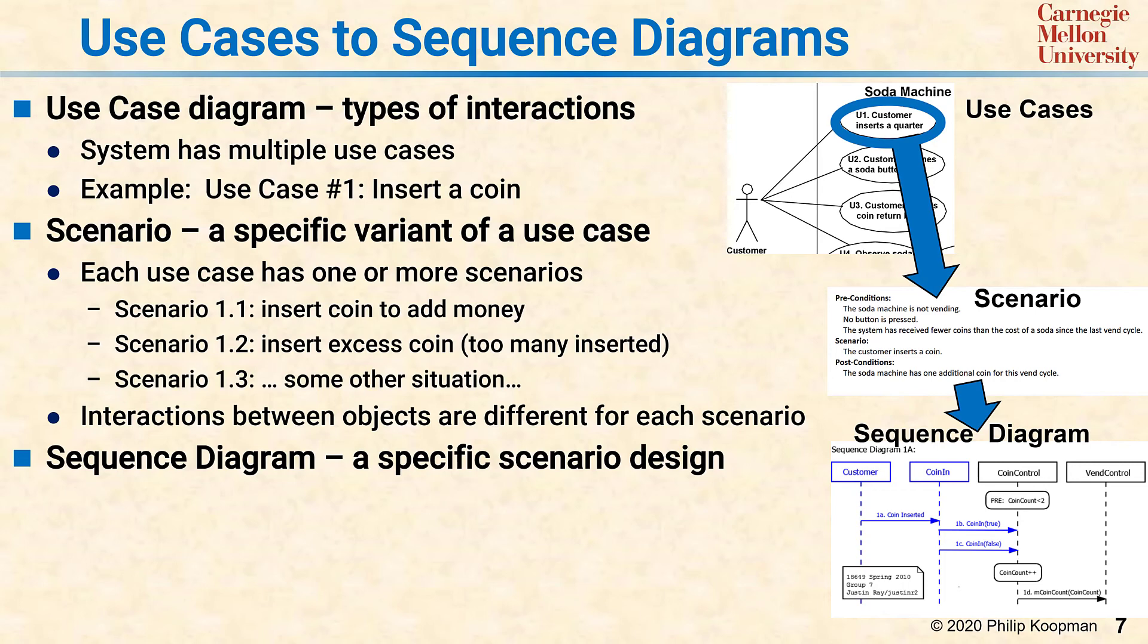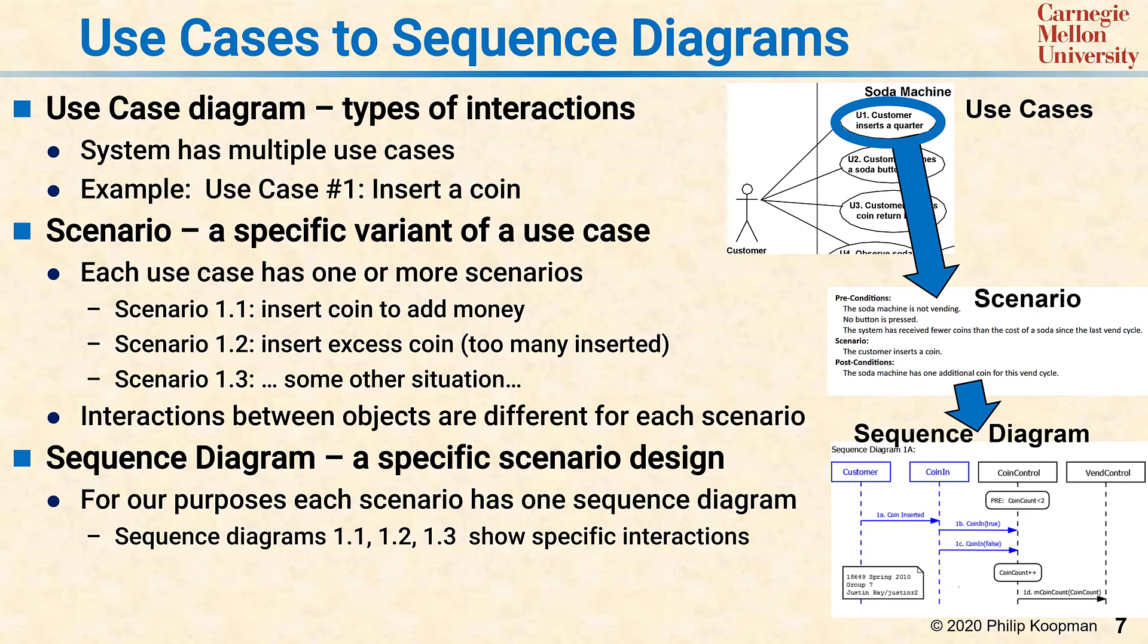Translating to a sequence diagram typically involves going from fairly generic set of steps in scenarios—step one, step two, step three—to much more precise descriptions of which object is sending what information to what other object.